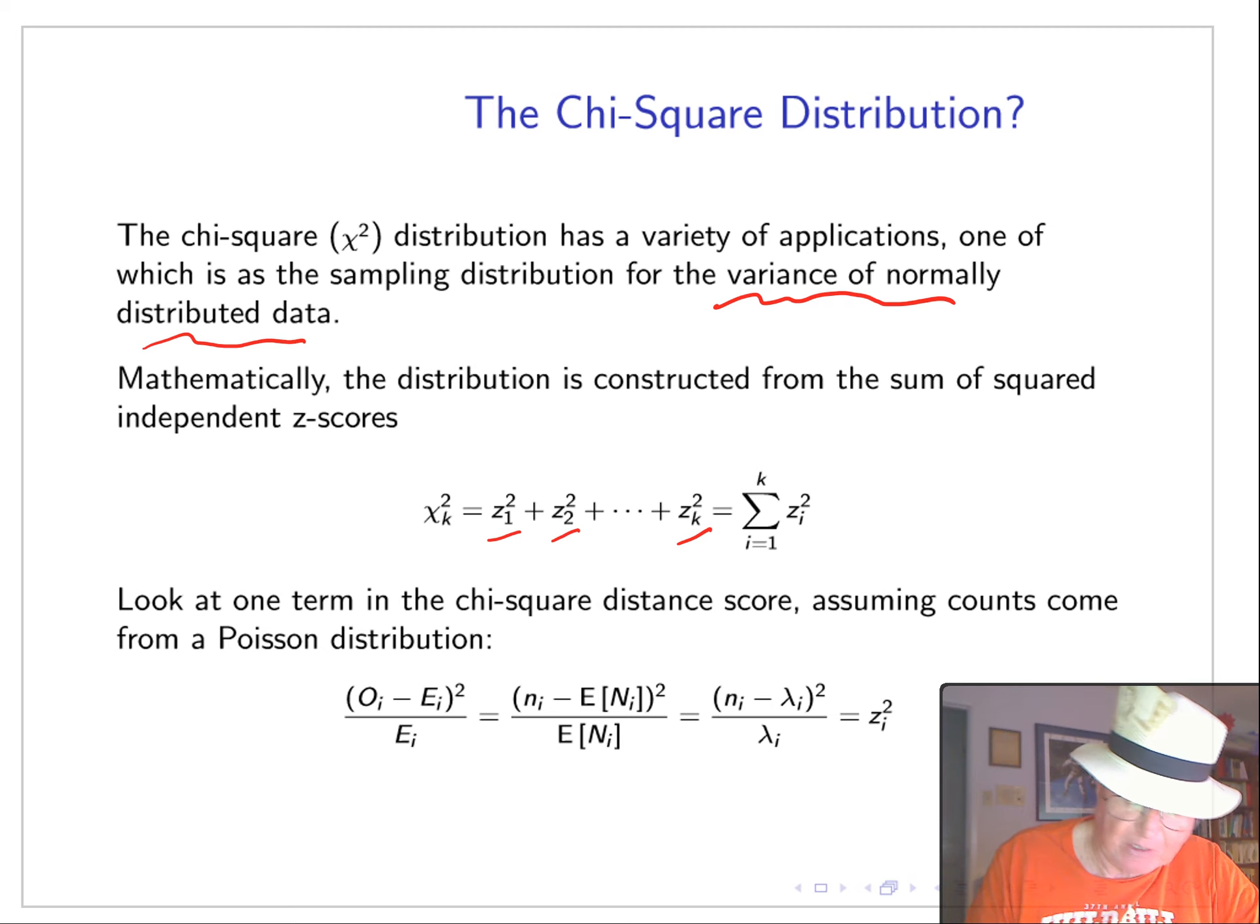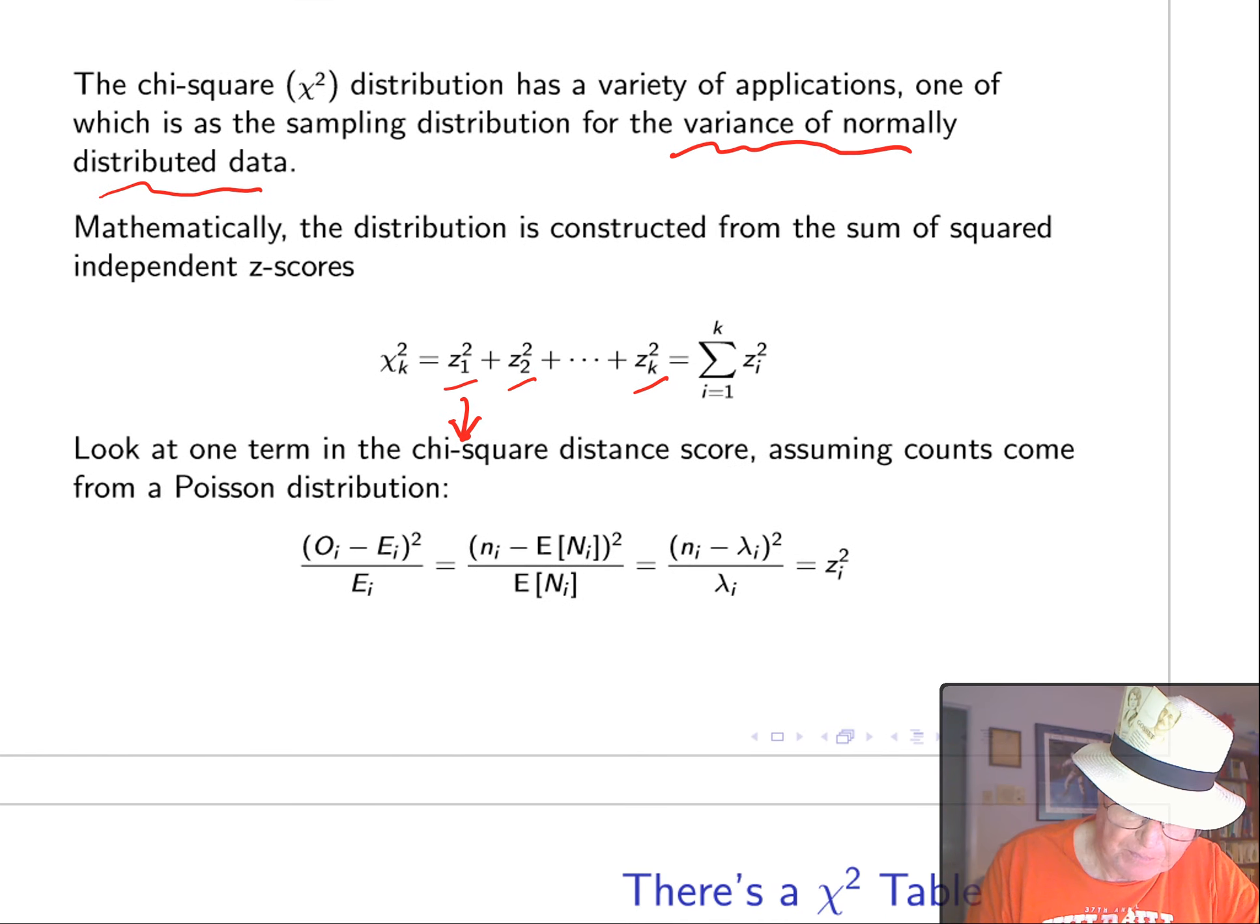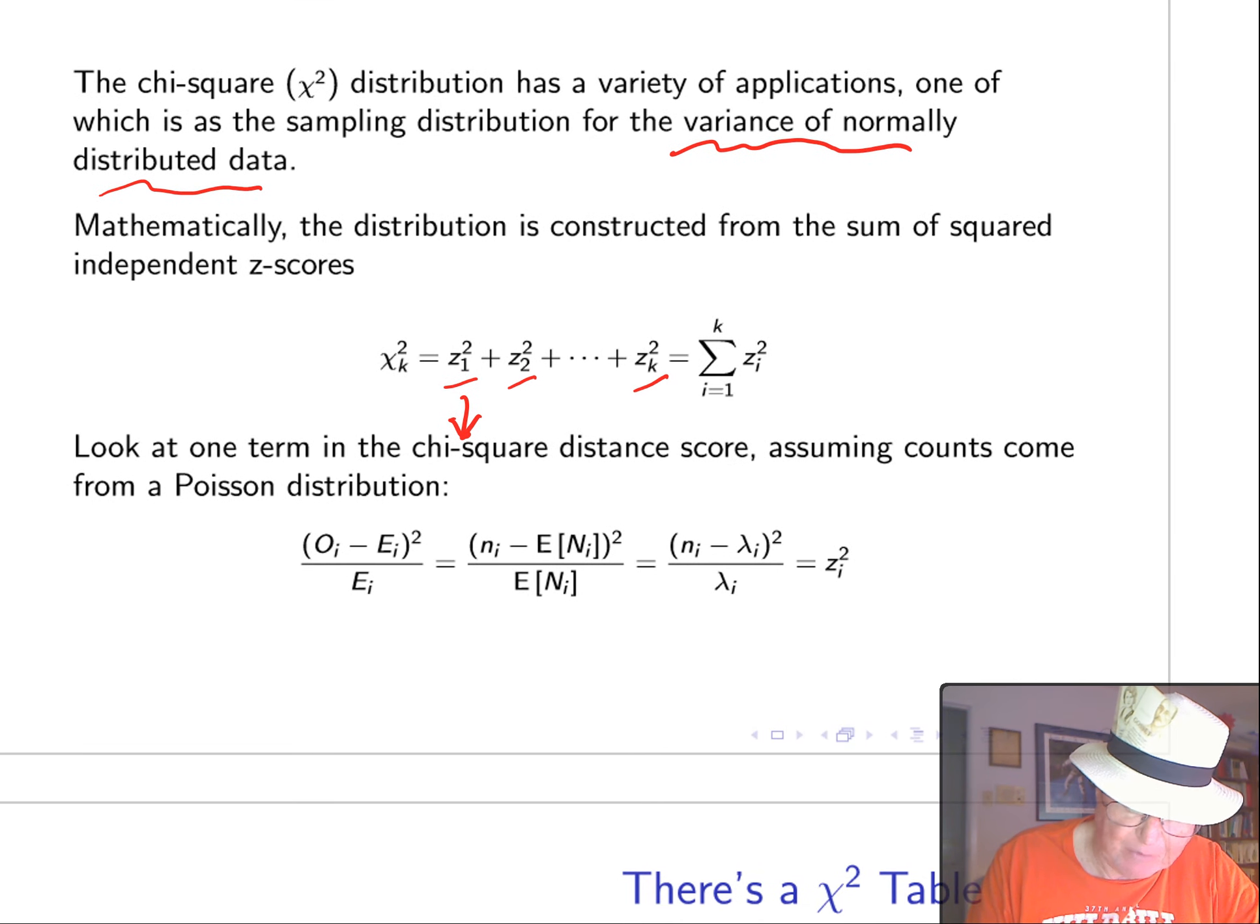Now, if we look at one of the terms in a chi-square score, well, if we think of the count as a Poisson random variable, then the expected value is just the rate parameter lambda, the mean, which is also the variance. Oh, how handy. Mean variance. And our numerator is just the deviation from the mean squared. And so that's a z-square, z-score squared.